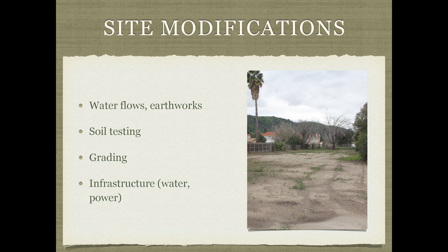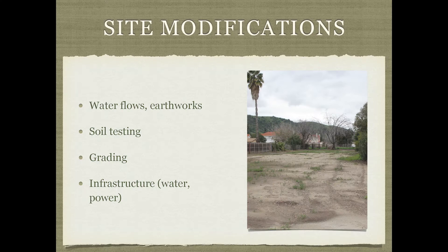Always do a soil test — especially for heavy metals in urban areas — and check the existing soil texture and organic matter. It's nice to do pre- and post-testing after a year of soil building to see what changes in soil quality. If you're on a really hilly area, you might need grading or terracing to flatten areas for food production. Water infrastructure generally needs to be installed at the beginning.